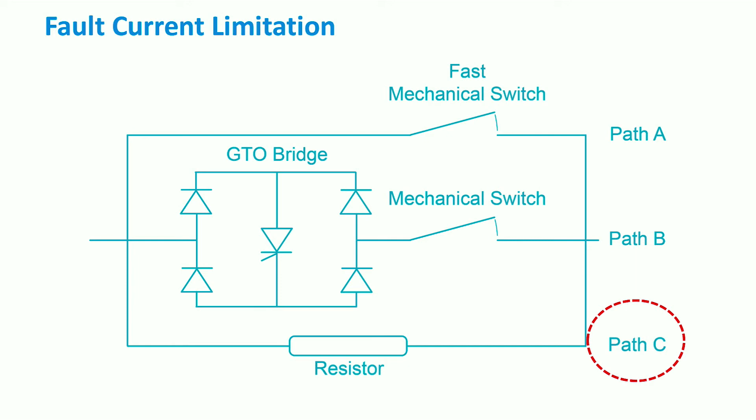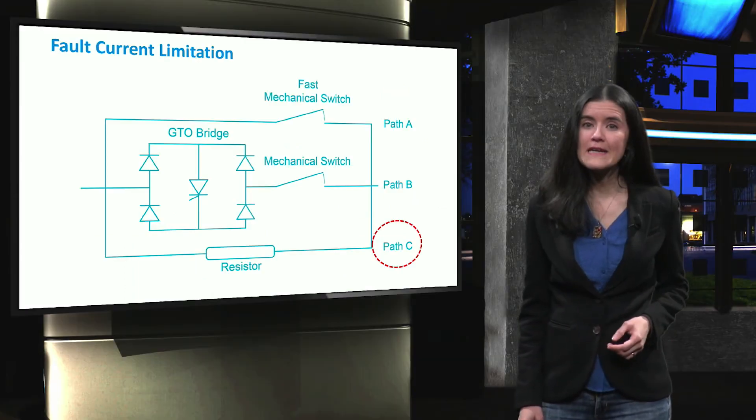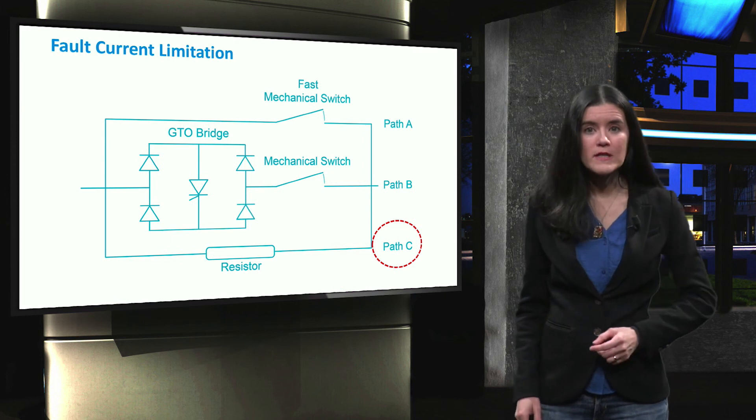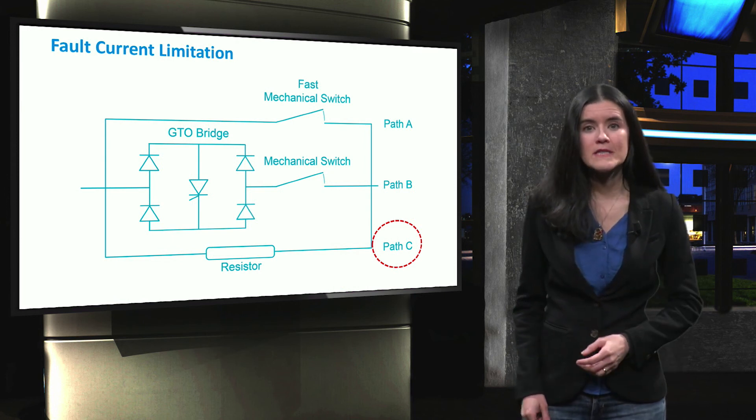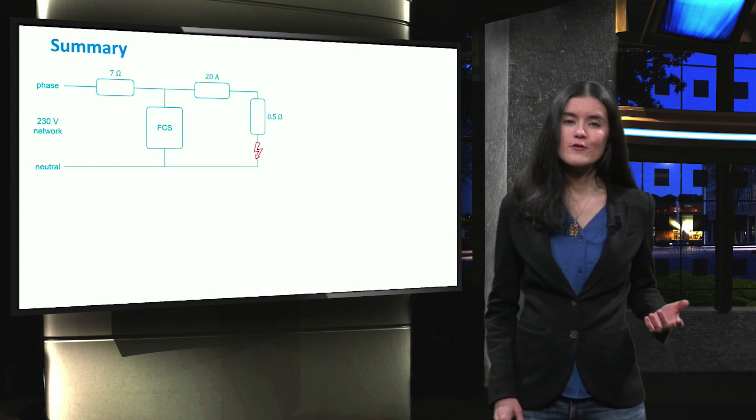The fault current is then limited to the addition of the resistor. After the fault is cleared, the gate turn-off thyristor GTO bridge can be used to bypass the resistor after the fault.